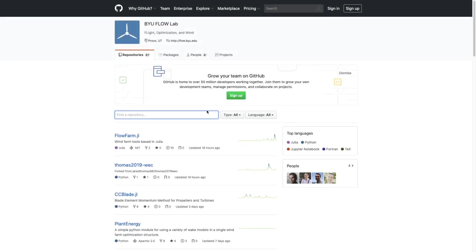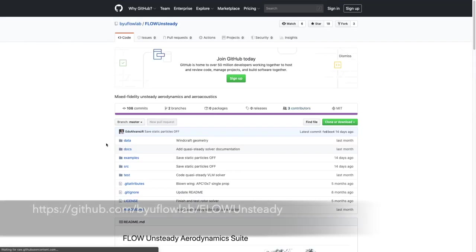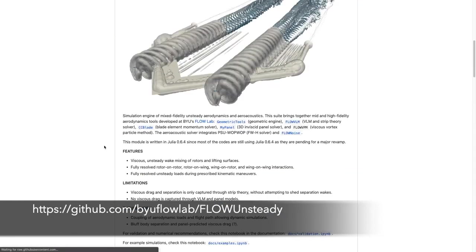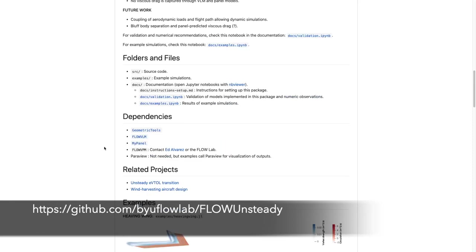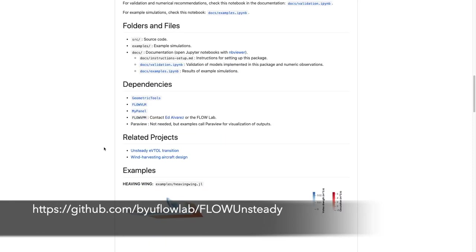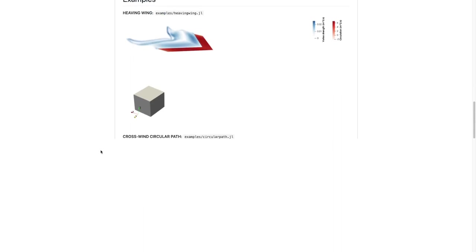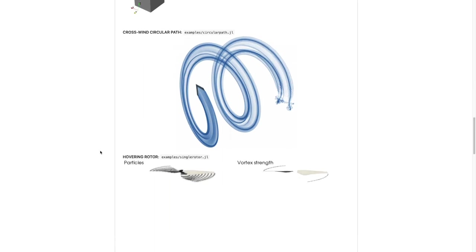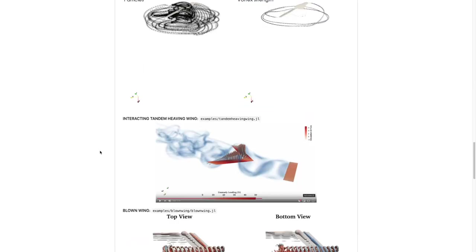As I mentioned at the beginning, to model the windcraft aerodynamics, we used flow unsteady, which is a suite of aerodynamic analysis tools developed at the BYU flow lab. The all-star of this set of tools is the viscous vortex particle method, or VPM. A VPM can be described as a mesh-free computational fluid dynamics method for the solution of the vorticity form of the Navier-Stokes equations, which we get by taking the curl of the more common momentum formulation.